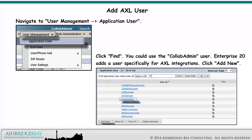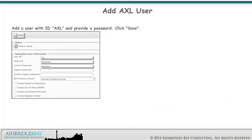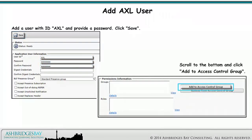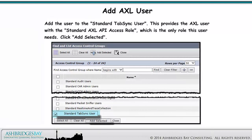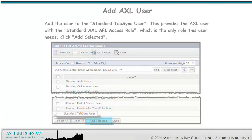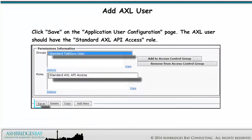Enterprise 20 adds a user specifically for AXL integrations. Click Add New. Add a user with ID 'AXL' and provide a password, then click Save. Scroll to the bottom and click Add to Access Control Group. Add the user to the Standard Tab Sync user — this provides the AXL user with the Standard AXL API Access role, which is the only role this user needs. Click Add Selected, then click Save on the Application User Configuration page. The AXL user should now have the Standard AXL API Access role.